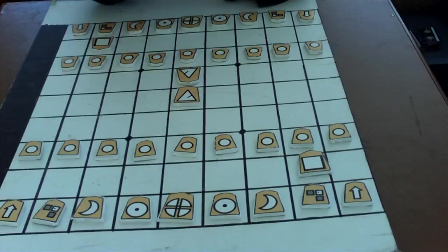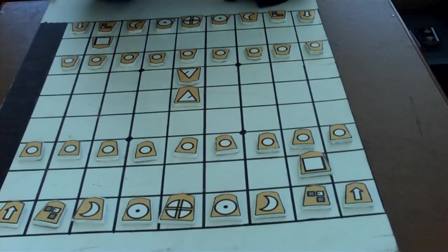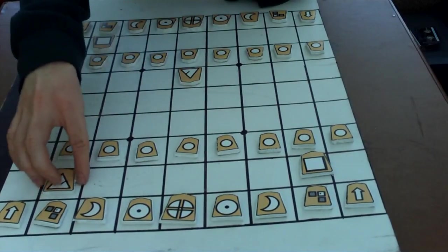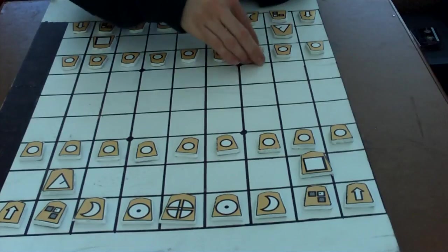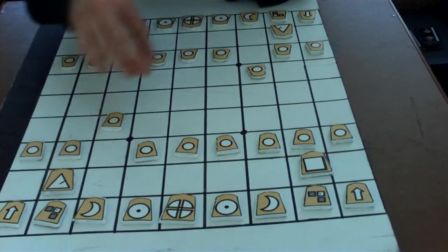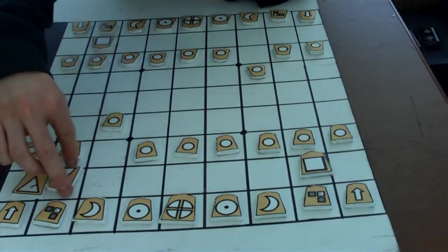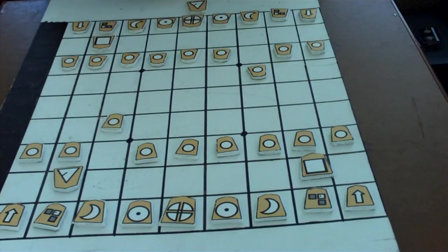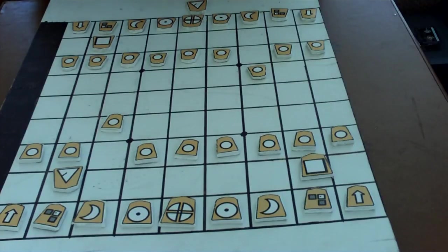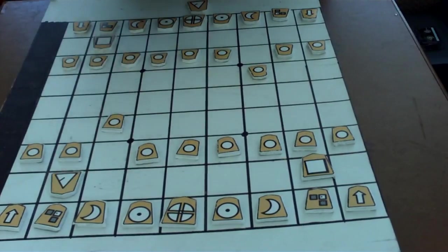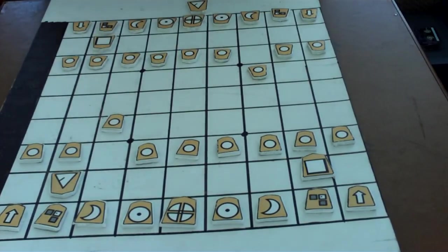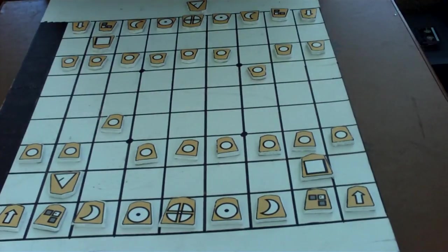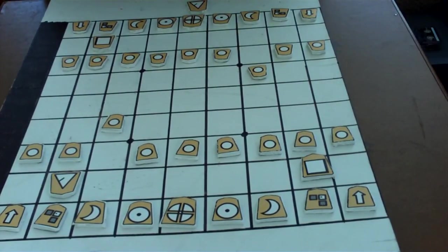Now, this is important because the main difference between shogi and chess is that when you capture a piece, you get to take it as your own, and you may drop it back on the board on a later turn. I'll show you an example. Move this here, move this here. Bishop captures the bishop. And now, I turn the bishop around and make it my own.